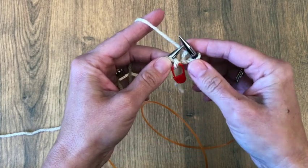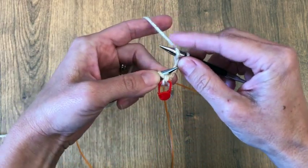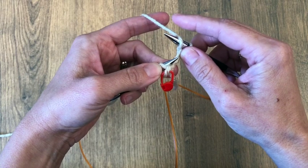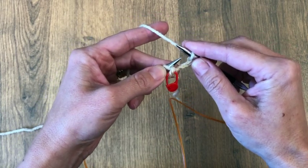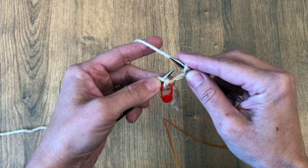I'm knitting here, so I need to bring my yarn forward and wrap it on the right needle from the front to the back. Now it's going to be loose until I knit the next stitch. I'm going to hold onto it with my finger.